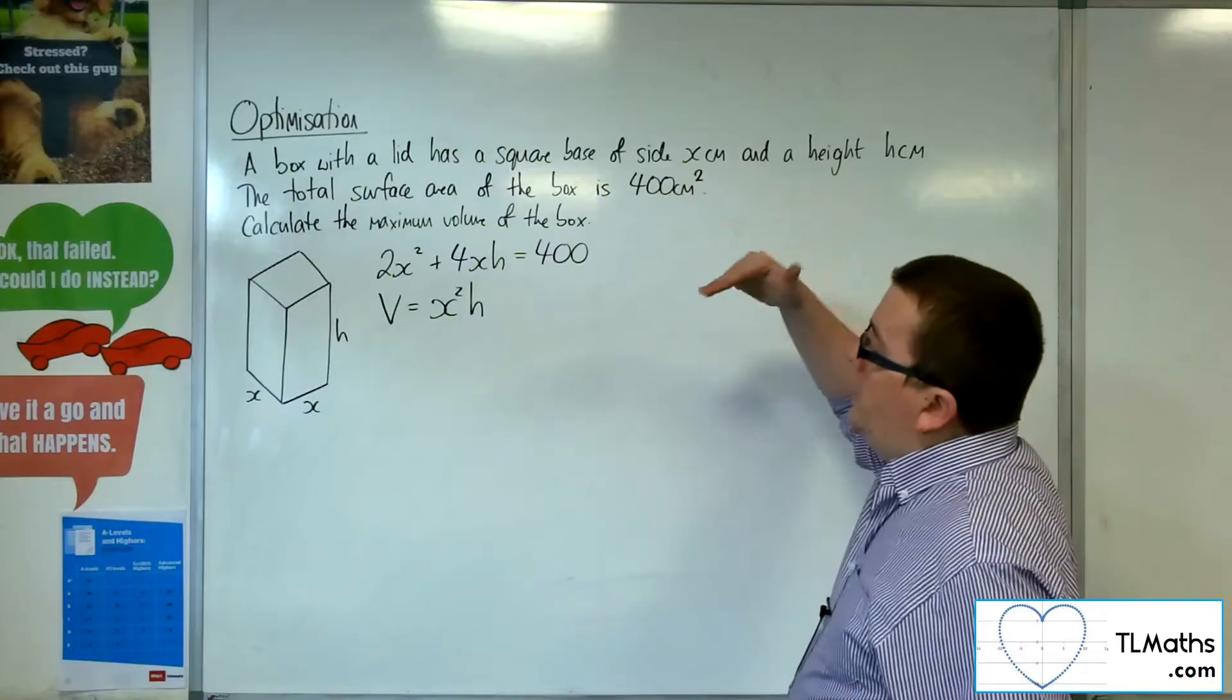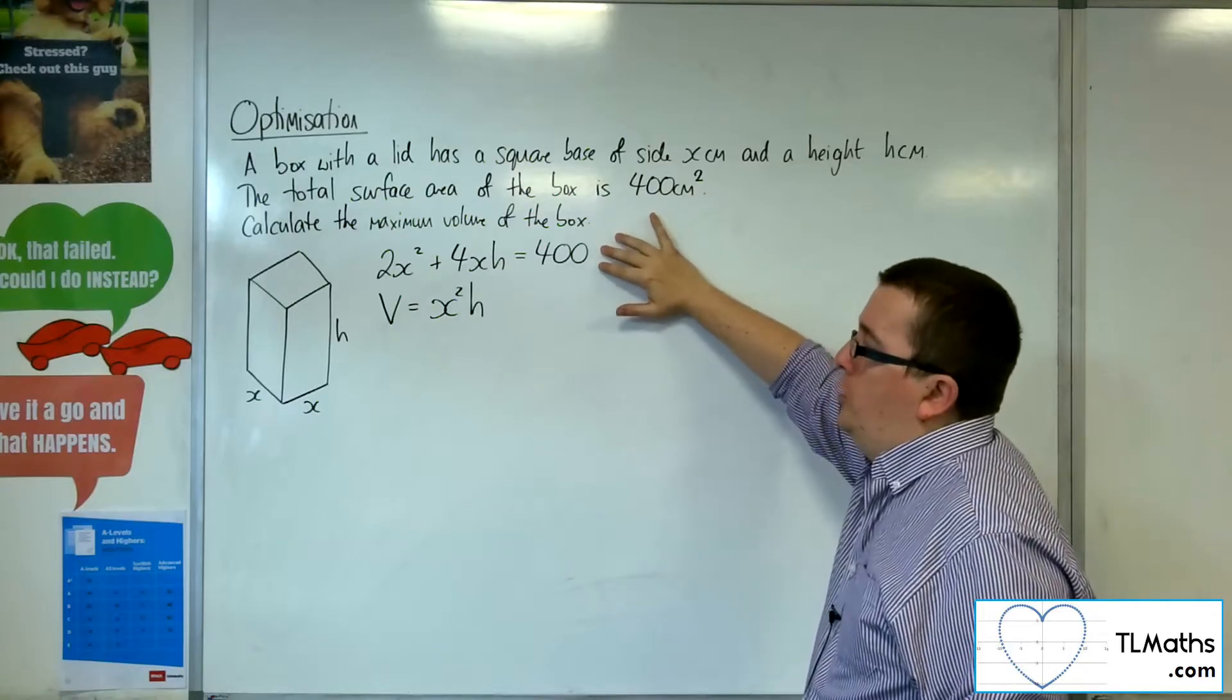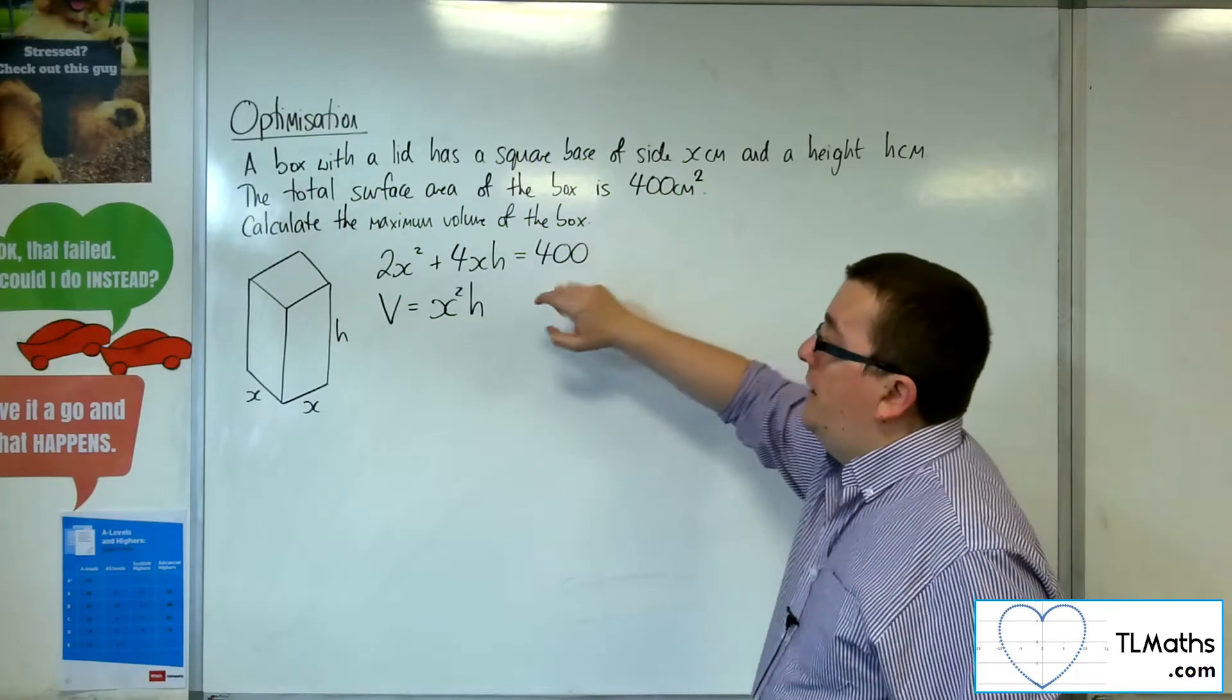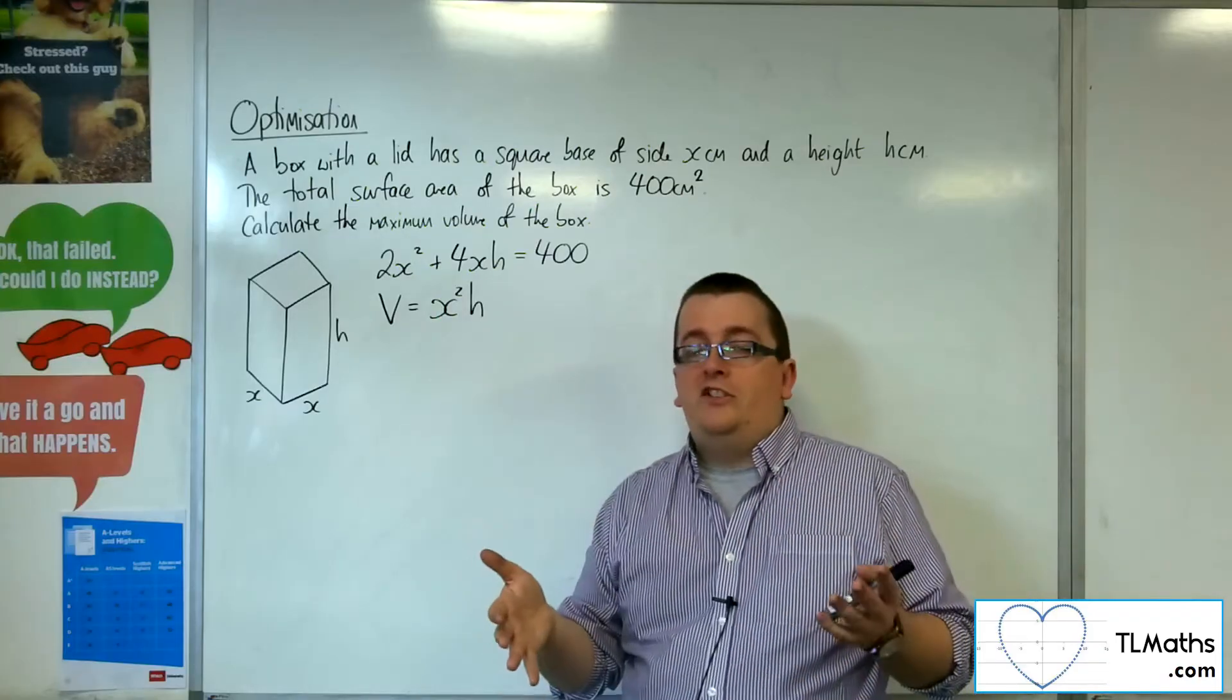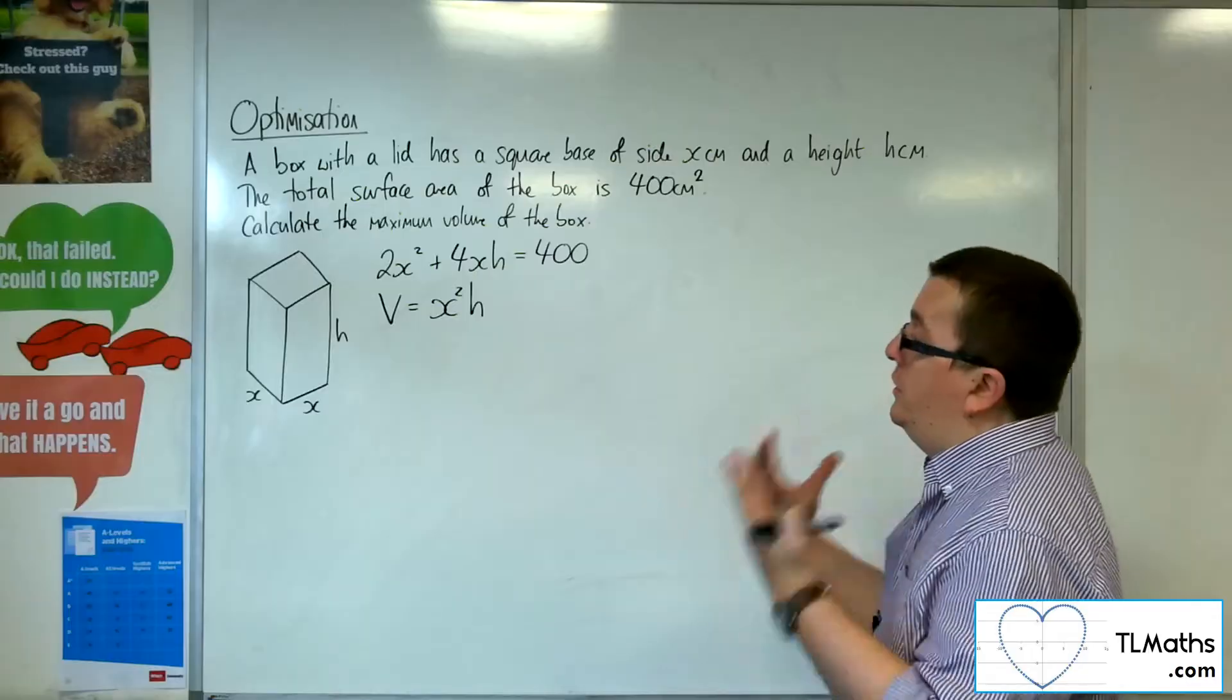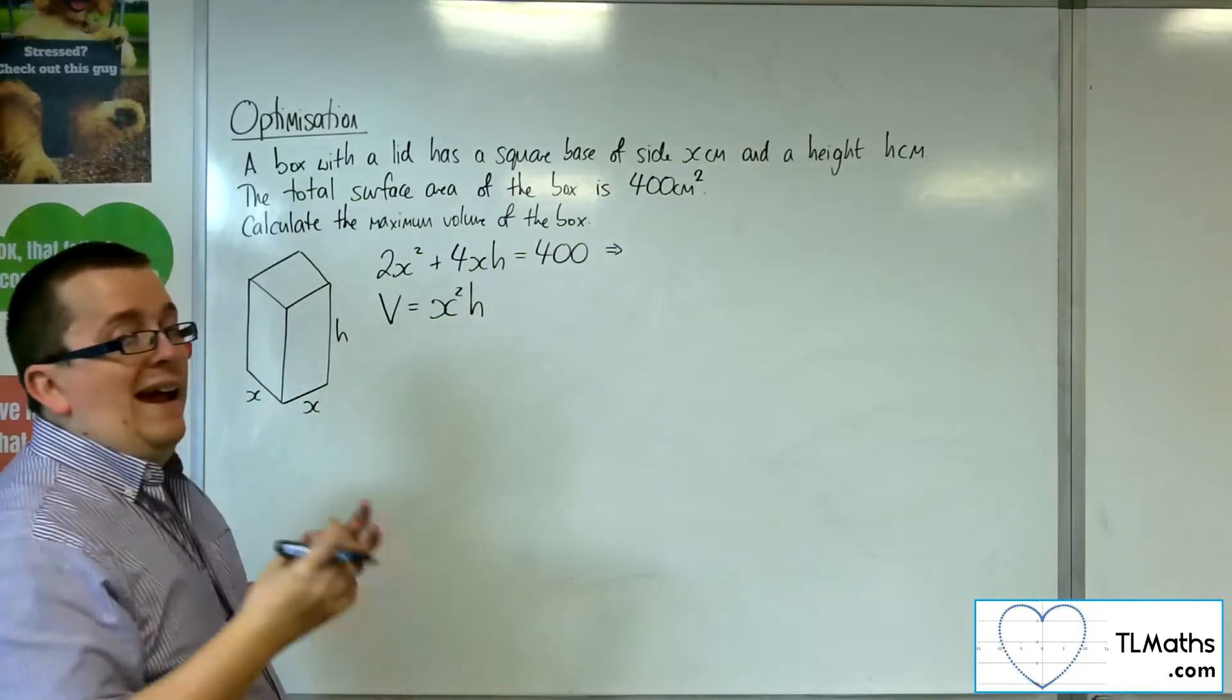Because I have information with the surface area, I can rearrange this equation to get h. And then once I'm there, I can substitute that equation into here so that I have the volume just in terms of x. Because I want to do some differentiation on that, I just need an equation that has x in it. I don't want that h being there.